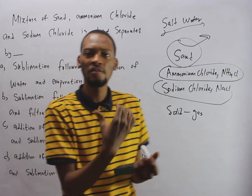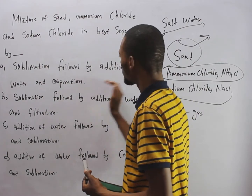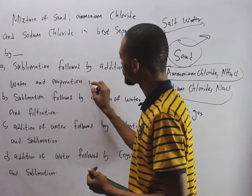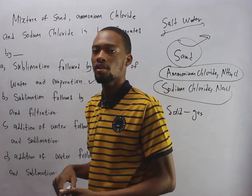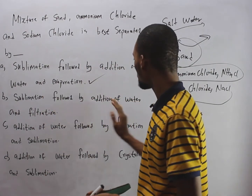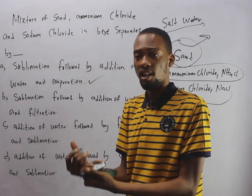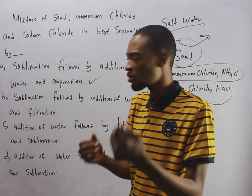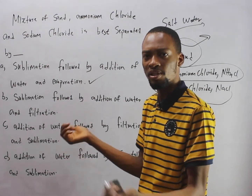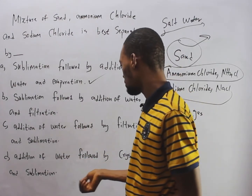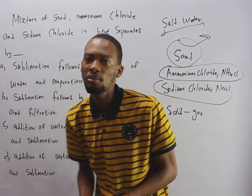So this is the procedure for this type of separation — sublimation followed by addition of water and evaporation. That is the correct answer. Because if you say sublimation followed by addition of water and filtration, once you filter, you are still left with salt and water. So filtration alone won't work, and you can't even filter salt and water because it dissolves completely. So the other options don't make much sense.